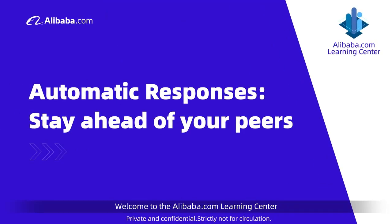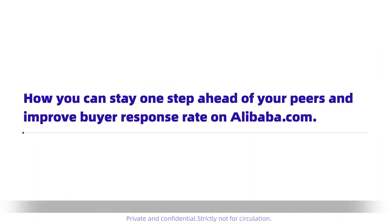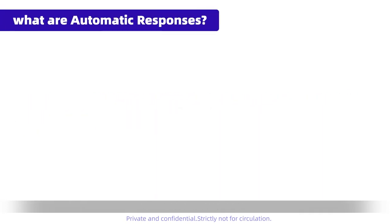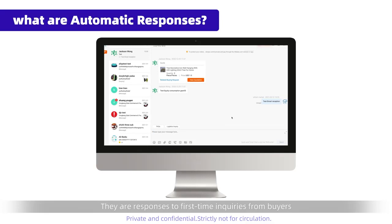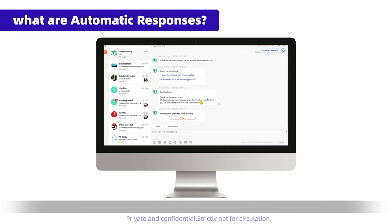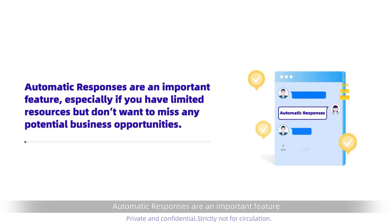Welcome to the Alibaba.com Learning Center. Today, we will discuss how you can stay one step ahead of your peers and improve buyer response rate on Alibaba.com. First of all, what are automatic responses? They are responses to first-time inquiries from buyers that are set up by you and sent automatically to ensure buyers hear back from you quickly, even outside of normal working hours. They are only sent to buyers whom you have had no contact history with in the past 30 days. Automatic responses are an important feature, especially if you have limited resources but don't want to miss any potential business opportunities.